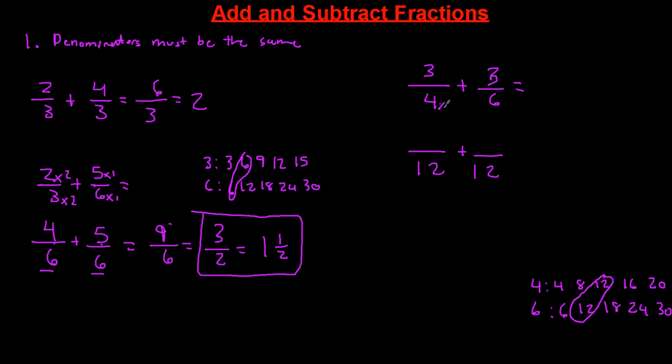So let's create our denominators with 12. 4 times what gave me 12? Times 3. So I got to multiply the top by 3, so now I have 9/12. 6 times what gave me 12? Times 2. 3 times 2 is 6. So let's go ahead and add this up. 9 plus 6 is 15.